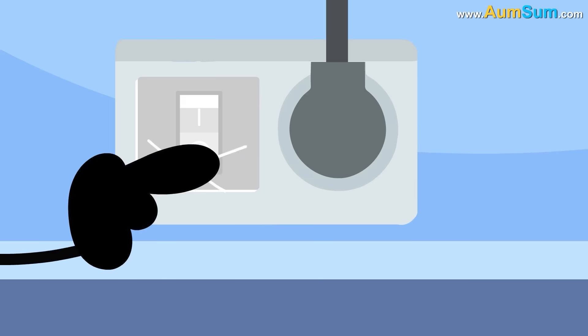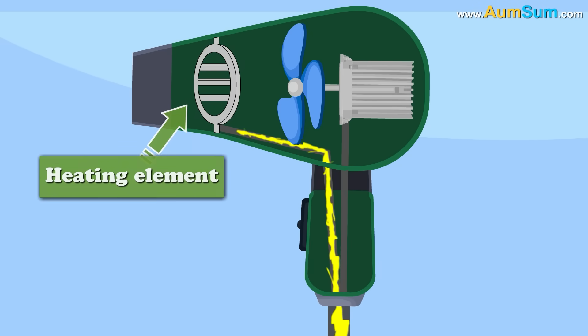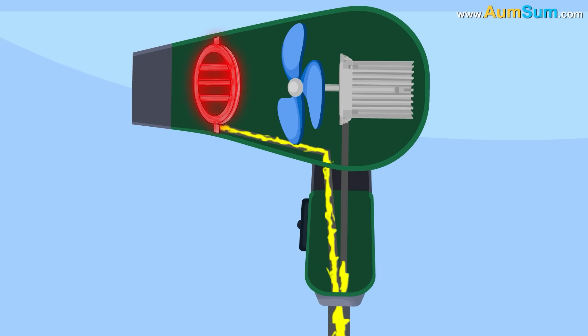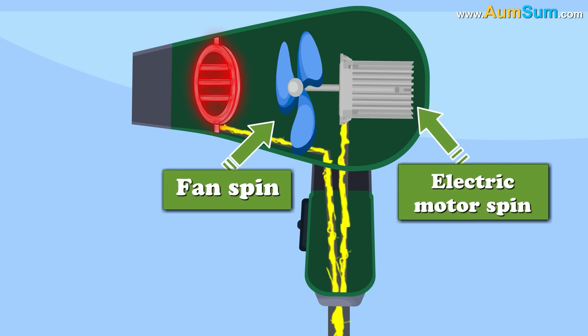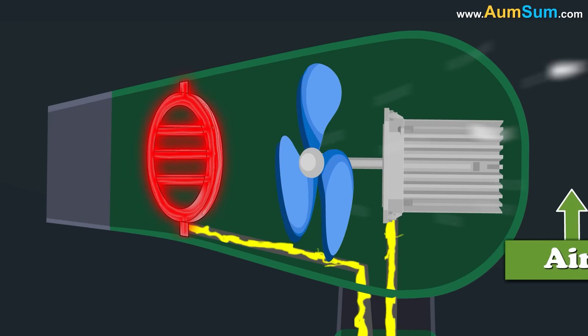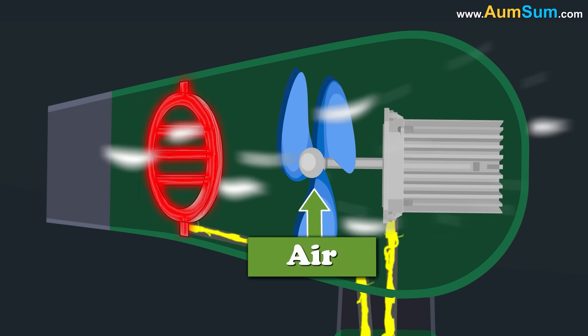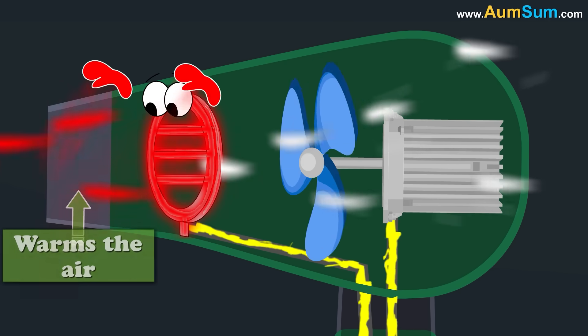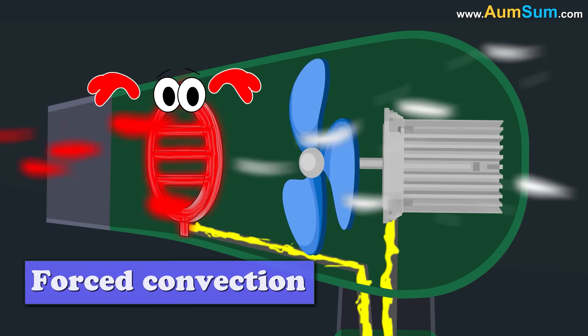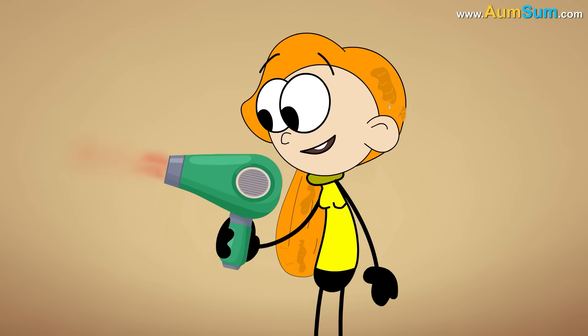When current starts flowing through the hair dryer, it is first applied to the heating element. It is then used to make the electric motor spin, which in turn makes the fan spin. The airflow which is generated by the fan is sent over the heating element. The heating element warms the air by forced convection. The hot air finally blows out of the hair dryer.